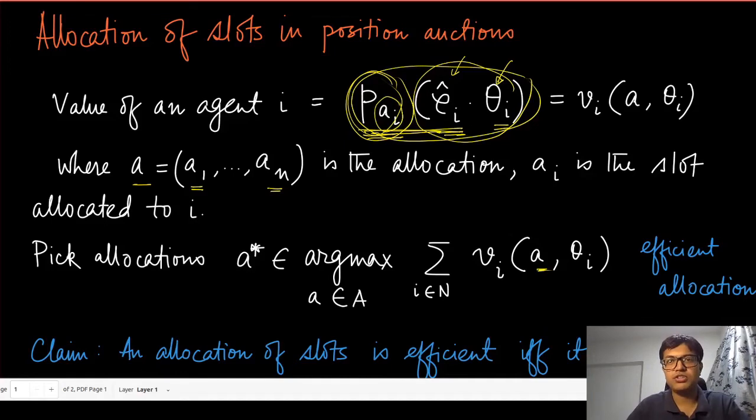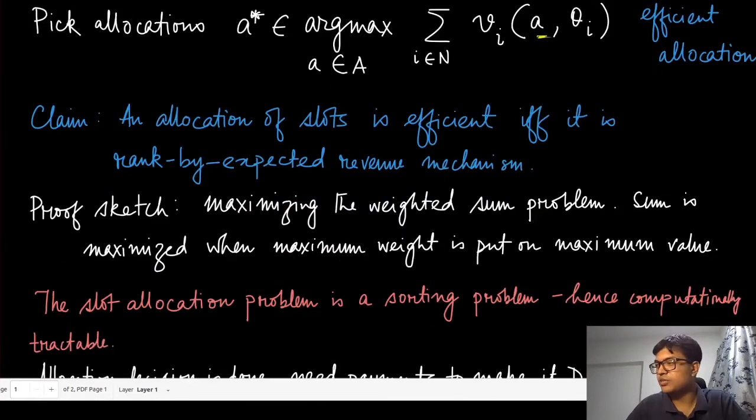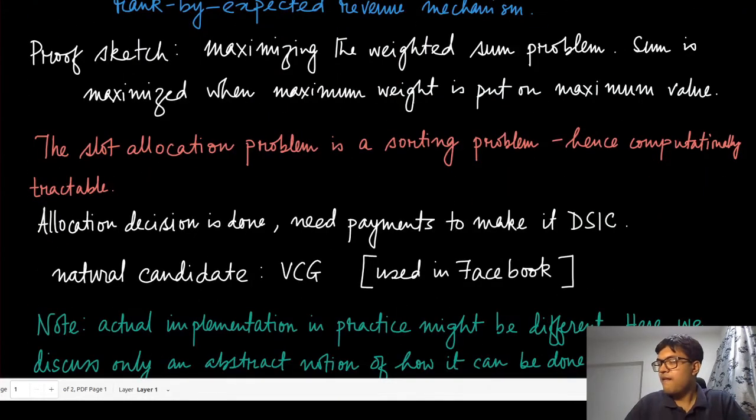That is the allocation. We are sorting all these agents with respect to their product ρ_i hat times θ_i and allocating them the positions sequentially. That is going to be the efficient allocation. Because this is a sorting problem, it is already computationally tractable.